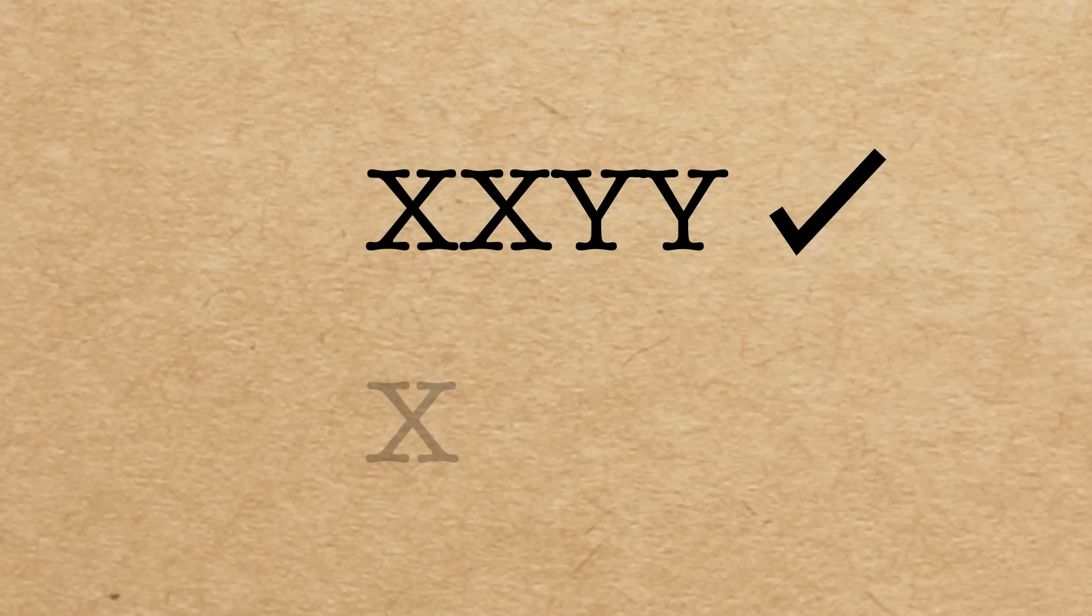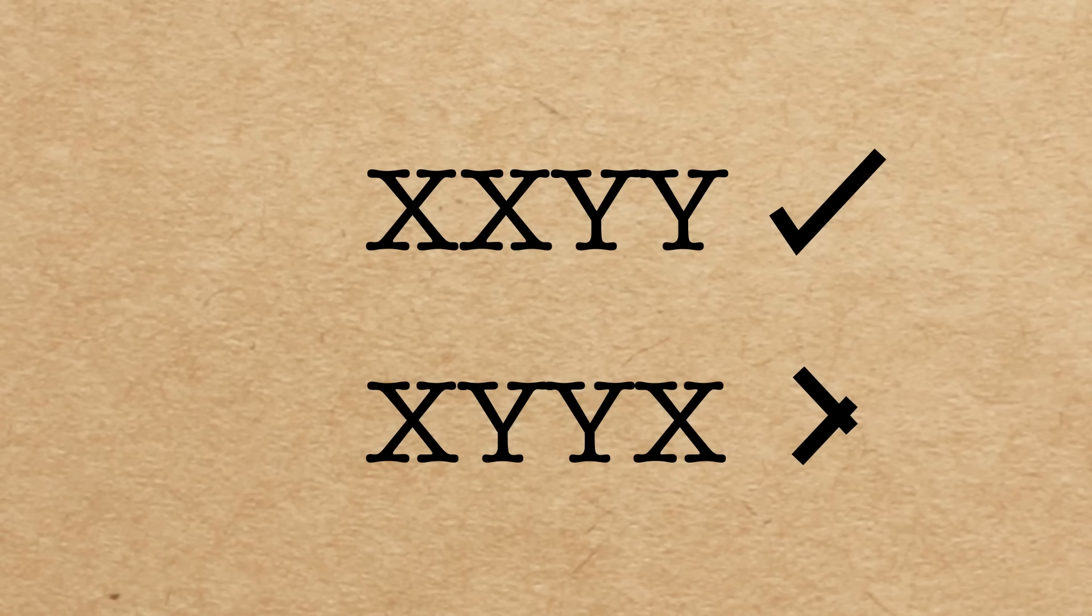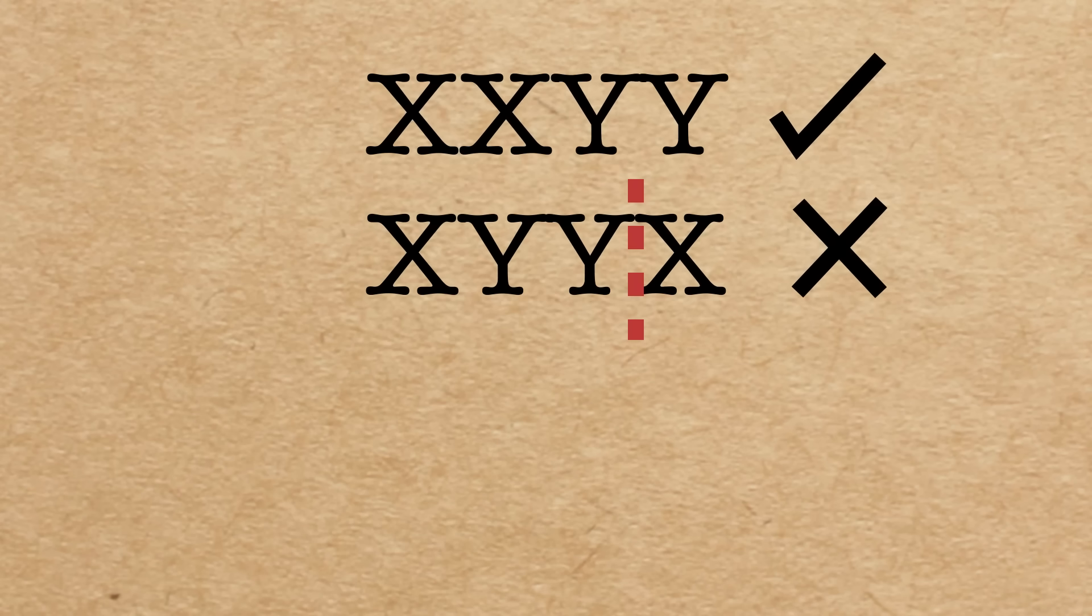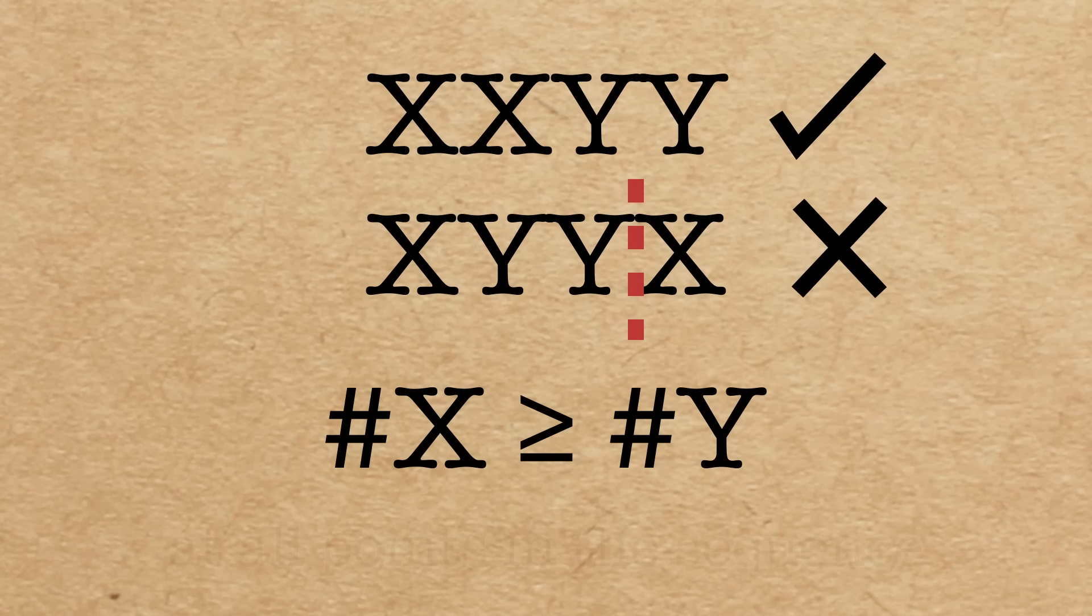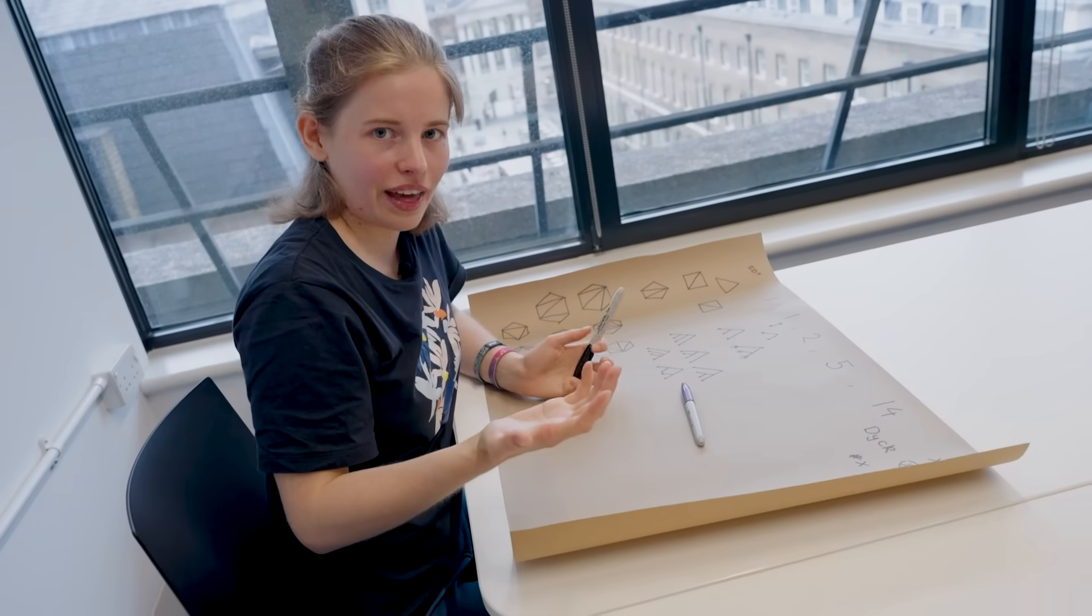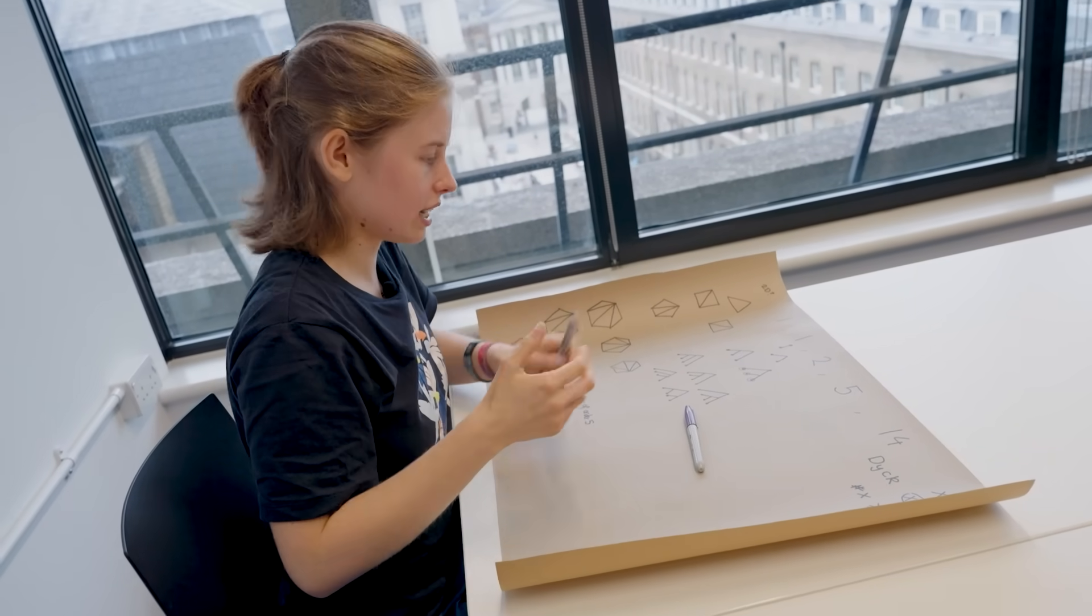Something like x y y x is not allowed because at this point if we cut it off here there are two y's and only one x. So the number of x's must be greater than or equal to the number of y's at all points in a sequence. So how many Dyck words are there for certain lengths?